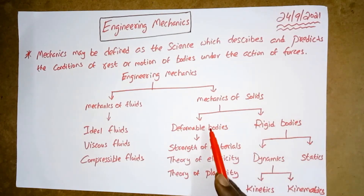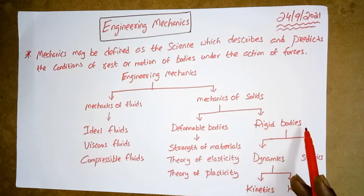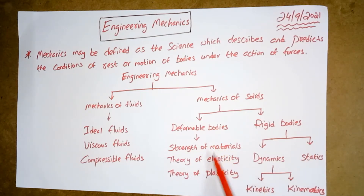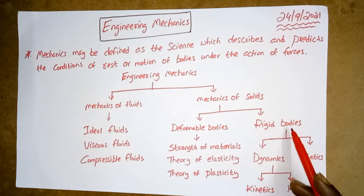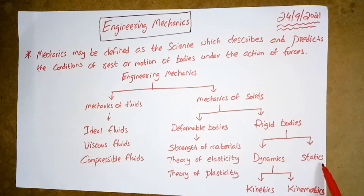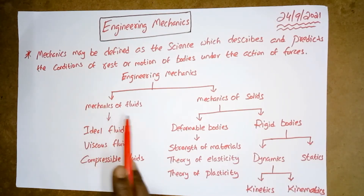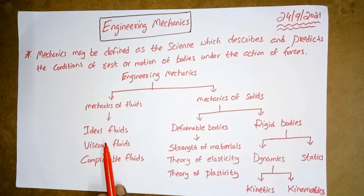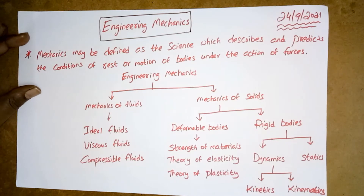Under mechanics of solids it is again classified into deformable bodies and rigid bodies. Under deformable bodies: strength of materials, theory of elasticity, and theory of plasticity. Under rigid bodies: dynamics and statics; under dynamics: kinetics and kinematics. Under mechanics of fluids: ideal fluids, viscous fluids, and compressible fluids. If you get a question on the classification of Engineering Mechanics, start with this definition and show this classification — that is sufficient.